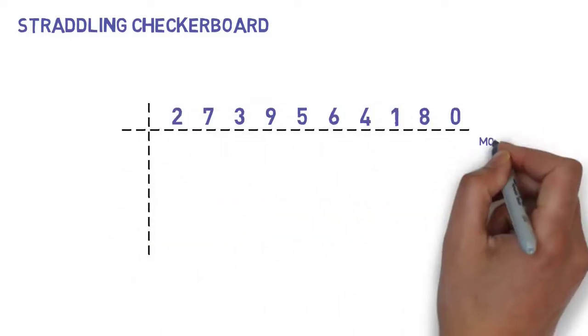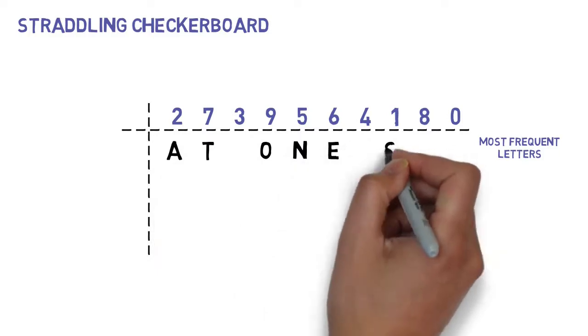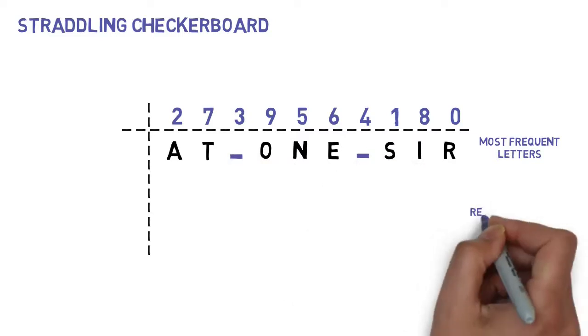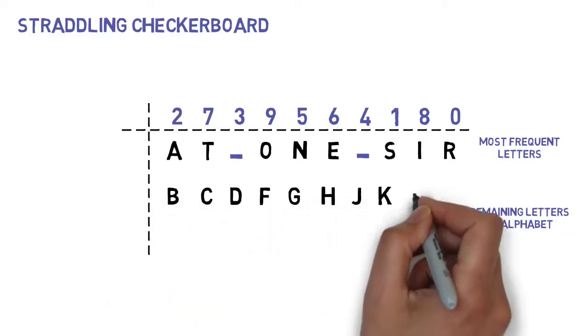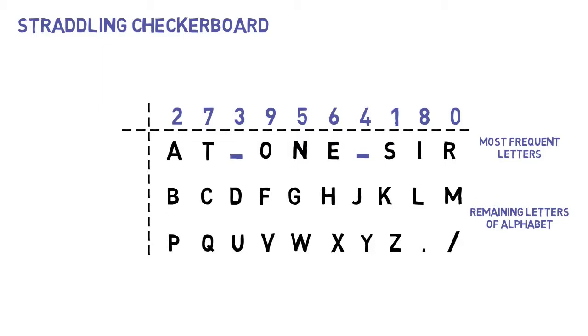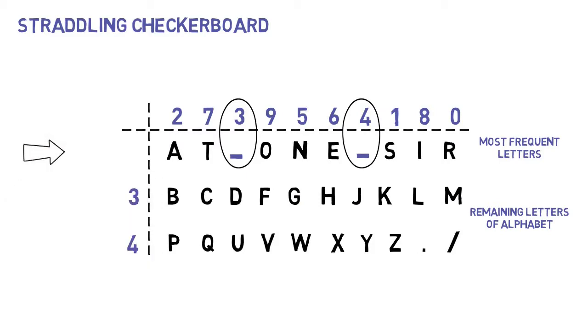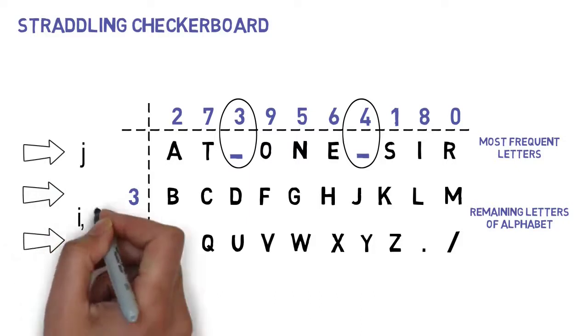The second row represents the eight most frequent letters of English. We are going to use the English mnemonic 'at one sir' to capture those letters, while making sure to include the spaces. The third and fourth row are filled with the rest of the alphabet in order, as well as with any special characters that might be used in a message, which usually are a period and a slash. The indices of a third and fourth row are going to be 3 and 4, since these are the indices not used for row 2. Thus, row 2 letters can be referred to by one index, which is the number of the column, and row 3 and row 4 letters can be referred to by two indices, one for the row and one for the column.